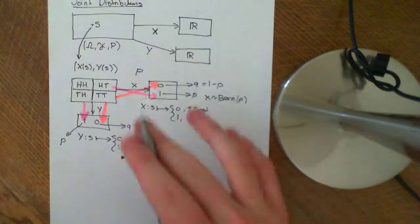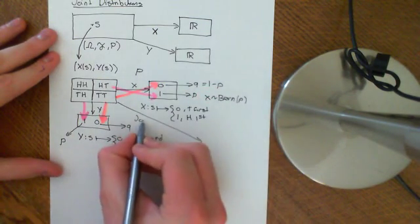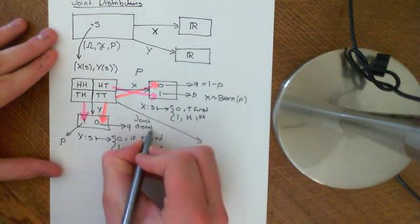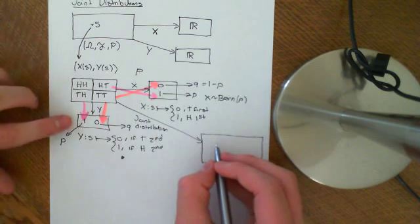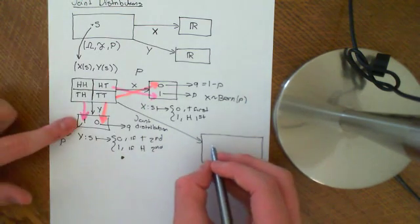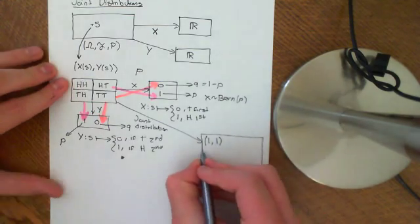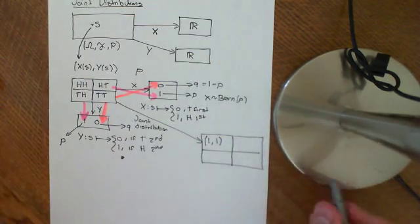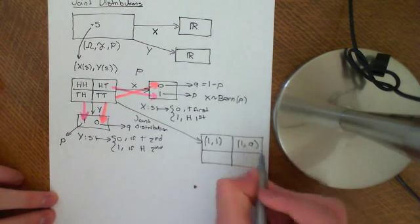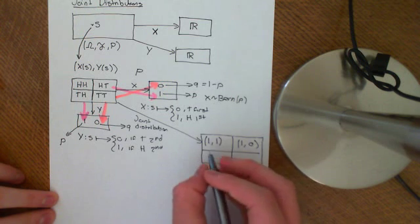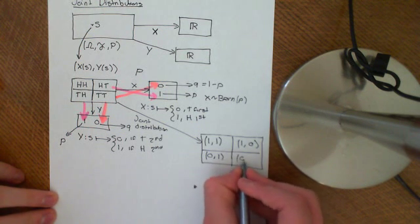We could think of this as a joint distribution which maps each outcome onto a pair of numbers — an ordered pair. So head-head is mapped onto (1,1); head-tail gets a 1 from X and a 0 from Y, so it's mapped onto (1,0); tail-head is mapped onto (0,1); and tail-tail is mapped onto (0,0). We can split this up in a table.